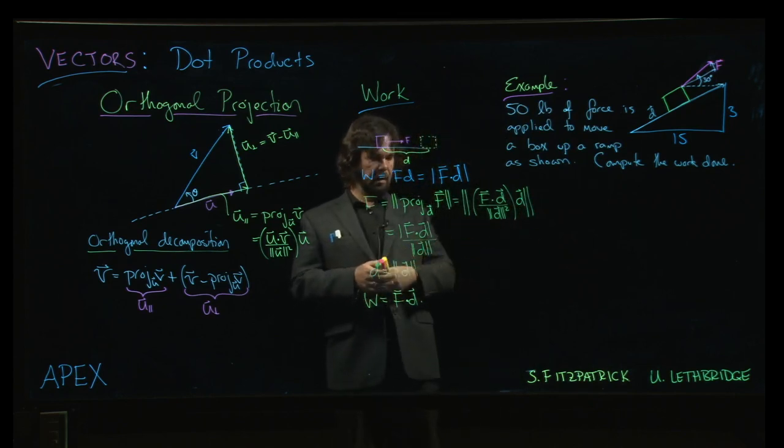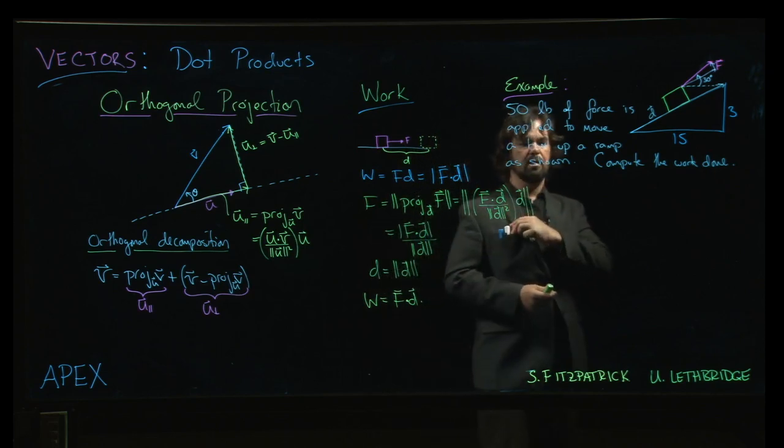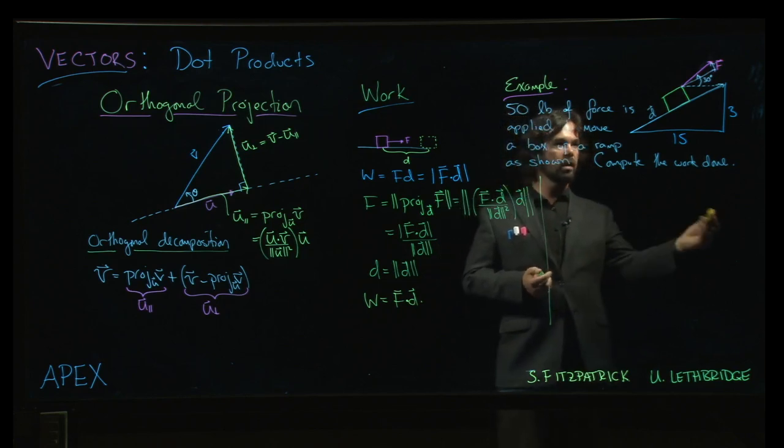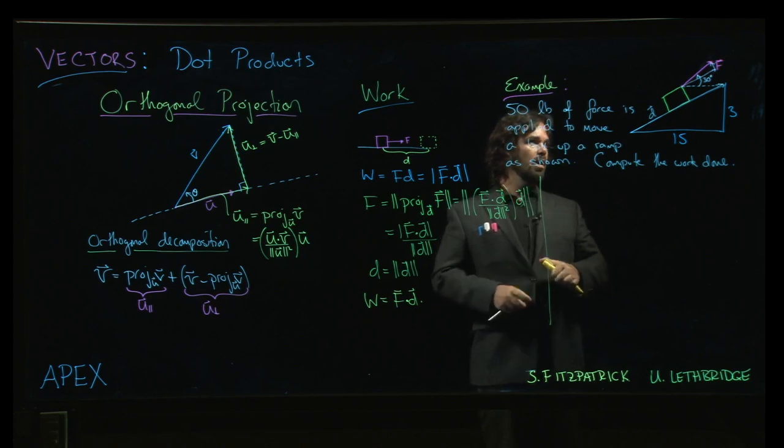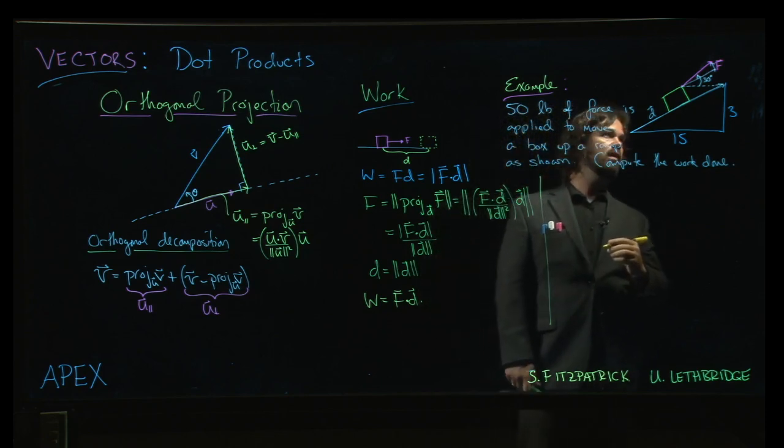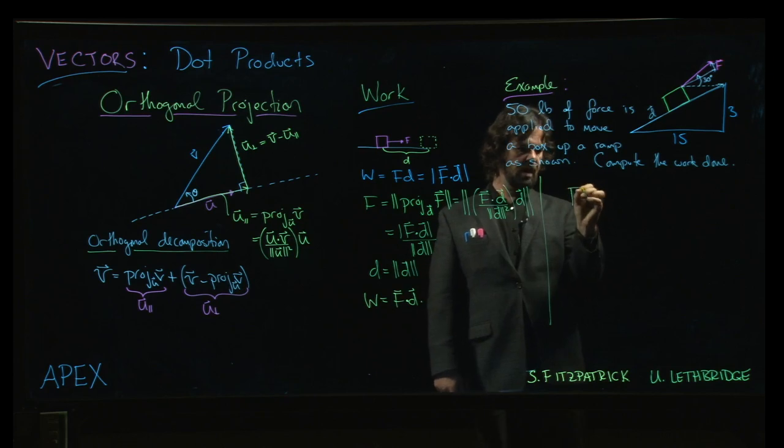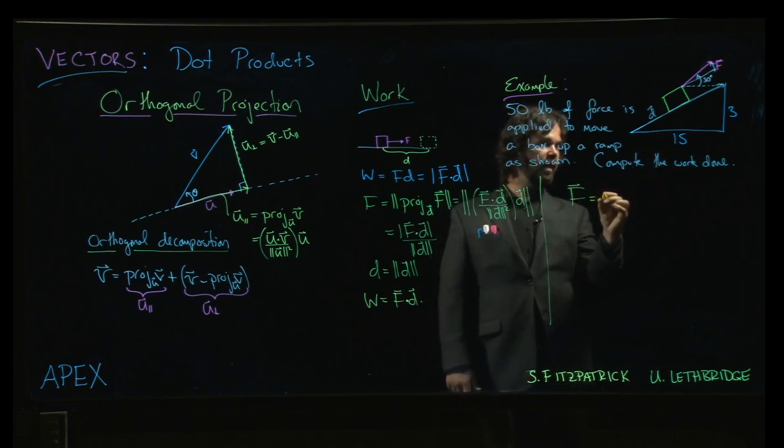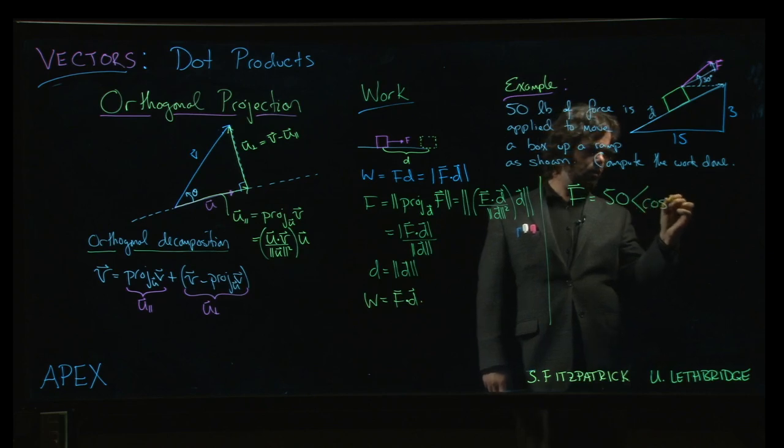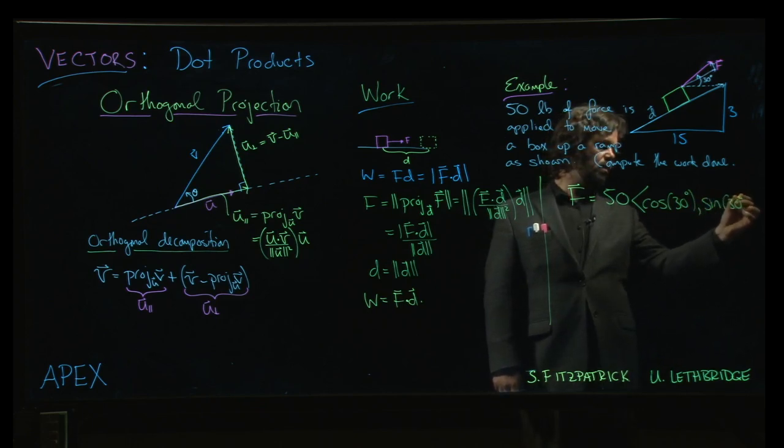So with all that in mind, we come to a problem like this one here. And what's kind of cool about this is that to calculate the work done by the force, all we really need to do is figure out what these two vectors are, F and D. So what can we say about F? Well, F is a vector, a force of magnitude 50. And we are given the angle of the force with respect to the horizontal. And we know that we can now do this, right? Cos 30 degrees, sine 30 degrees.